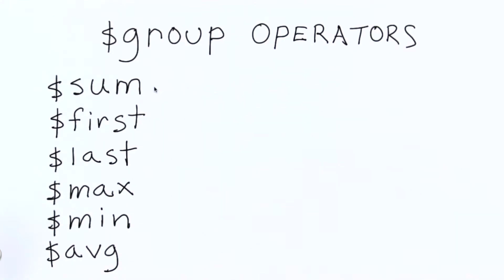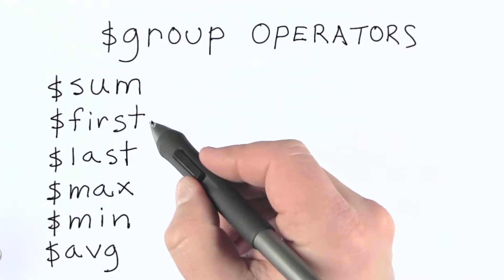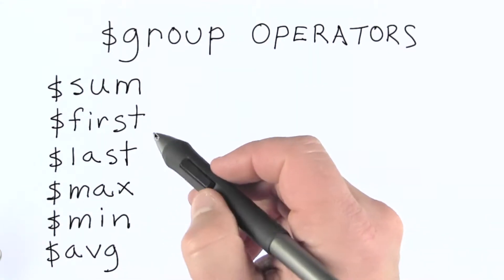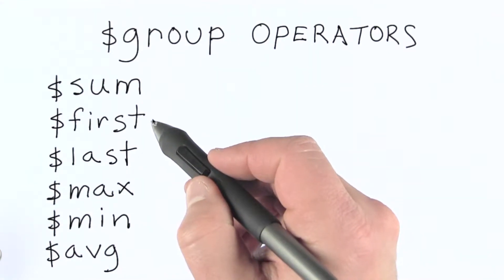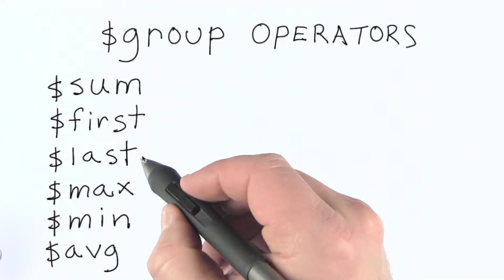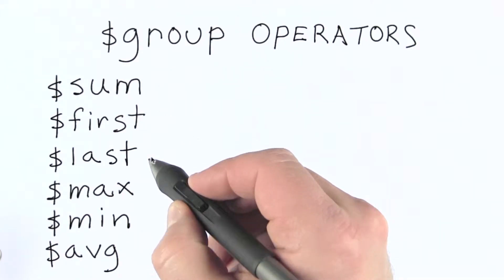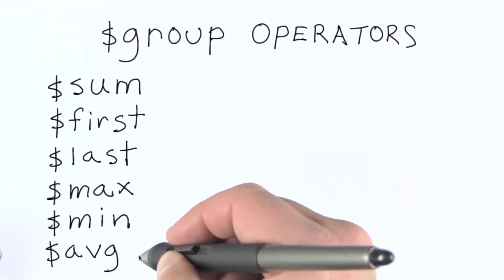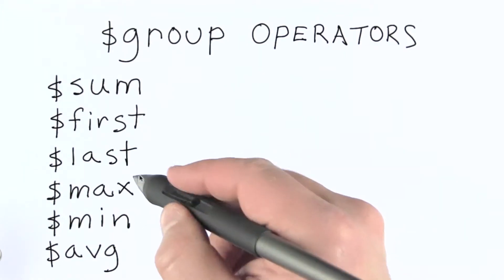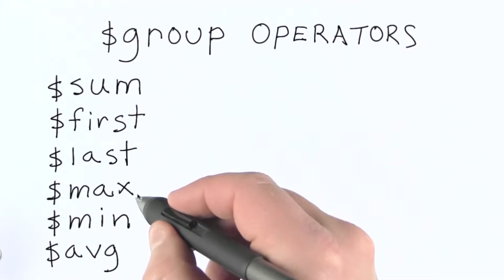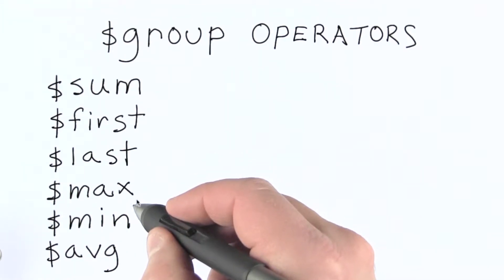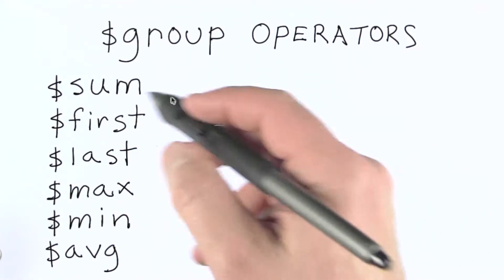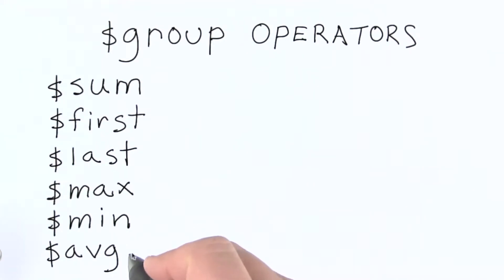We've seen several of these. First simply selects the first document in a group. Last selects the last document in a group. Max, min, and average all do what you might expect — based on a numeric value we're calculating as part of a group. As one example, let's take a look at average.